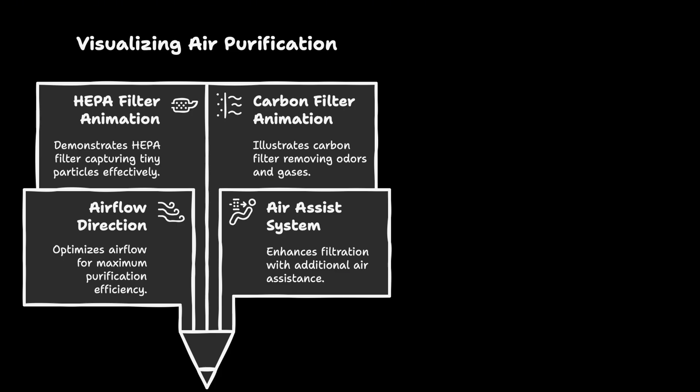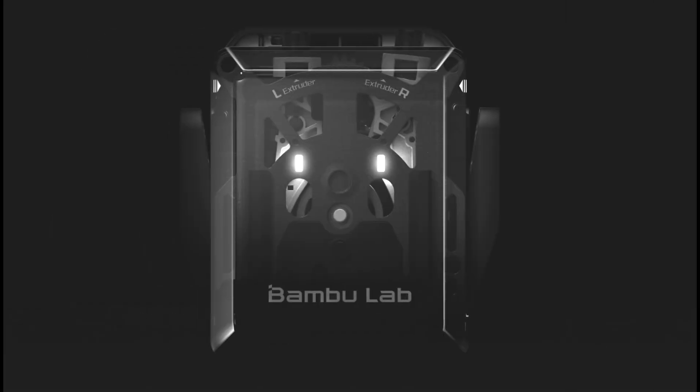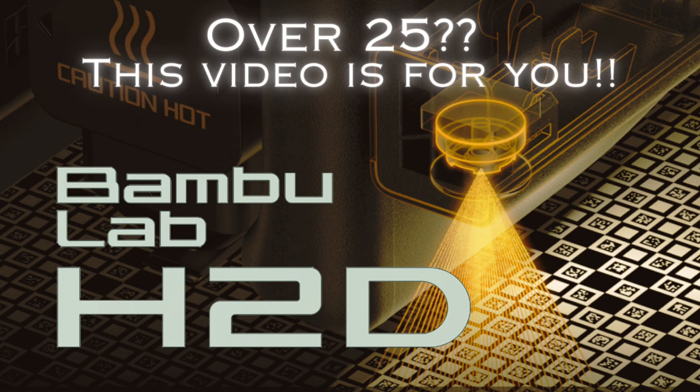The H2D's modular design integrates seamlessly with the AMS2 Pro, making it a true all-in-one machine. From dual nozzles to laser cutting and etching, this printer is built to handle anything you throw at it.